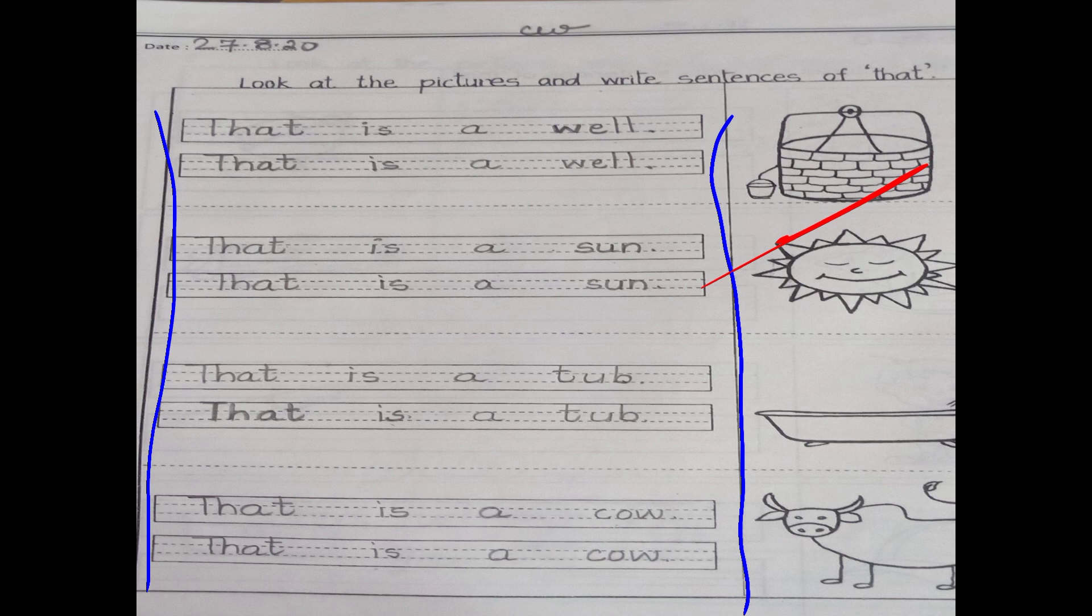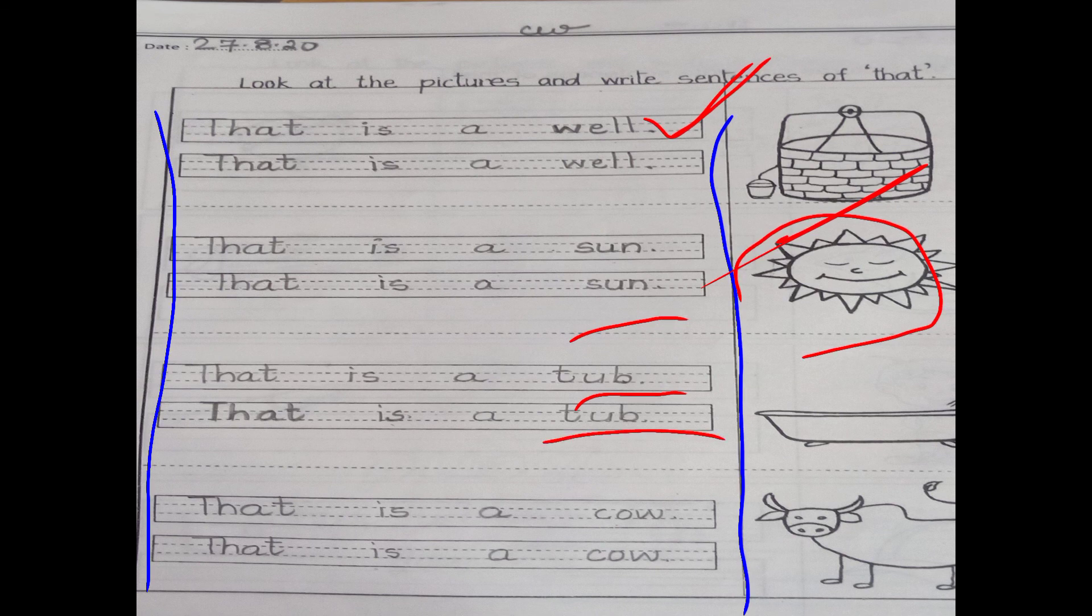So aaj hum konsi wali pictures karengi? 'That', hum se door hai. So first is, that is a well. W-E-double L, well. What is the meaning of well? Kuwa. Kuwe mein kya hota hai? Paani. Next is which picture is this? Sun, smiling sun. That is a sun. Kyunki jaha pe 'that' or 'this' jaate hai, unke saath saath mein kaun aata hai? 'Is', 'is', 'on', 'a'. 'Is' 'is' 'on' 'a'. That is a sun. Next is that is a tub.